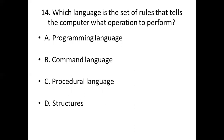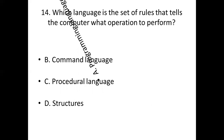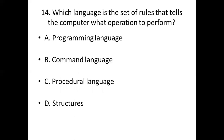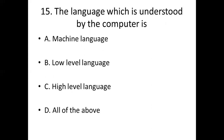Fourteenth bit: Which language is the set of rules that tells the computer what operation to perform? Option A: Programming language. Option B: Command language. Option C: Procedural language. Option D: Structures. Answer: Option A, programming language.